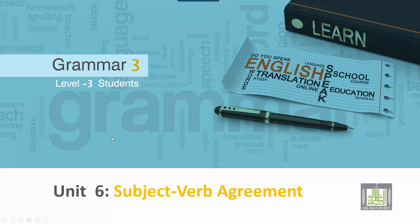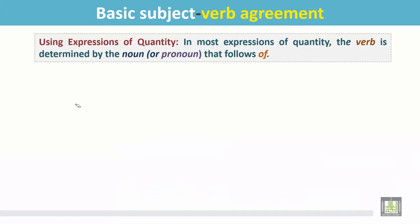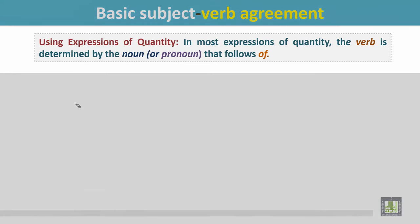Grammar 3 for level 3 students, unit 6: subject-verb agreement — basic subject-verb agreement using expressions of quantity. In most expressions of quantity, the verb is determined by the noun or pronoun that follows 'of.'